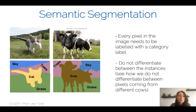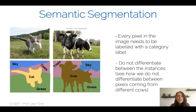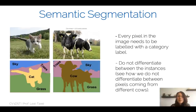This is essentially the task of semantic segmentation: every pixel in the image needs to be labeled with a category label — semantic classes like cat, trees, cow, or sky. Note that we do not differentiate between instances. For example, if we have two cows, all pixels in both cows receive the label 'cow.' In semantic segmentation, we do not differentiate between pixels from different cows. When we move to instance segmentation in the next lecture, we will make that distinction.